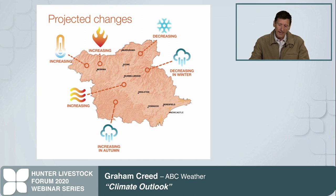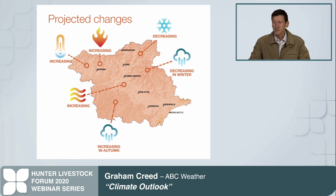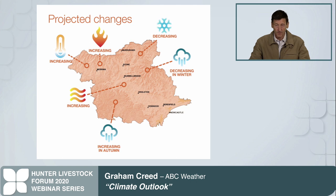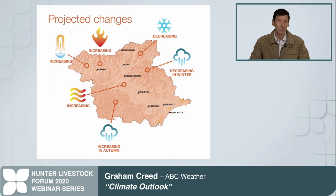Added to the climate outlooks is climate change. Temperatures have increased over a degree across Australia - in the atmosphere and also in the oceans - and that is already incorporated into the climate outlook models. This is the Hunter region and these are the projected changes: increasing temperatures, increasing fire dangers, decreasing snowfall about the higher parts, decreasing winter rainfall, increasing rainfall in autumn through some areas, and staying pretty much the same through spring and summer potentially. These changes are all incorporated into those climate outlooks.